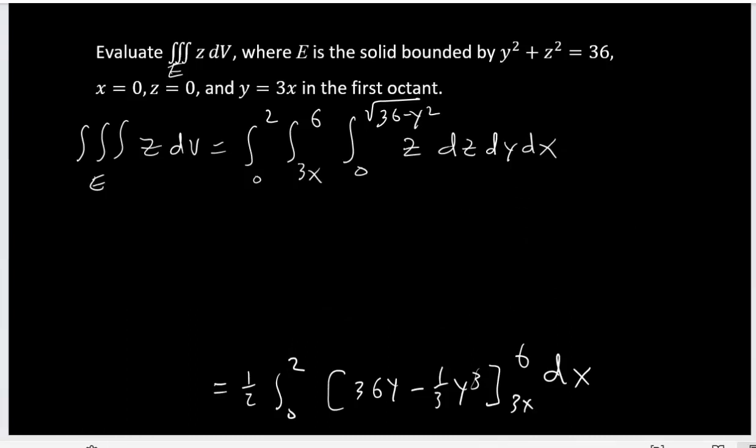So let us plug the limit we have there. One half, 0 to 2, then we have 36 times 6 minus one third, 6 to the 3, that's the upper limit.